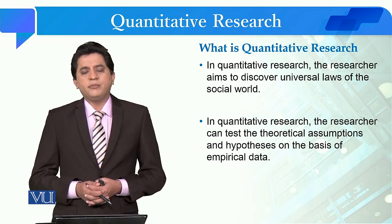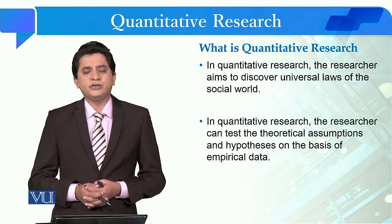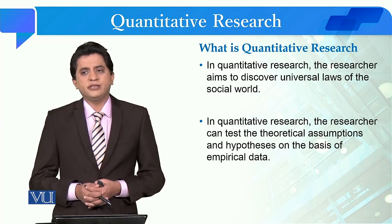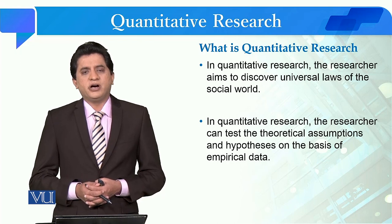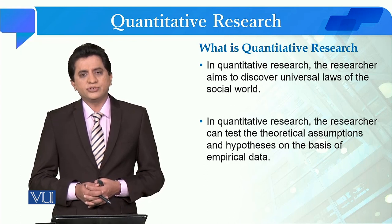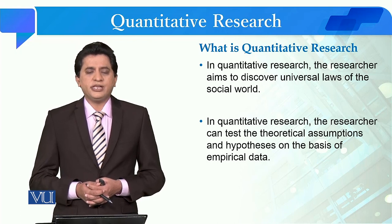Similarly, we assume that the agenda of social science is to explore universal laws of the social world. That means we need to see how poverty can be eliminated from society, how inflation can be controlled, how the crime rate can be controlled, and how tolerance can be increased in society.